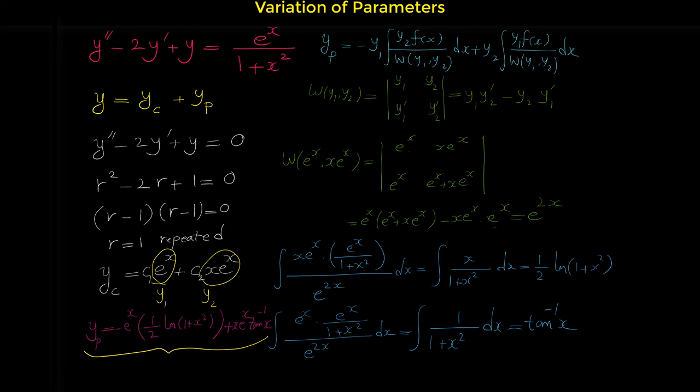And here we have the complementary solution. Adding the complementary solution and the particular solution gives us the general solution of this differential equation. I hope by watching this video you have learned about finding the solution of a non-homogeneous differential equation with the method of variation of parameters. If you like this video, please subscribe to my channel.